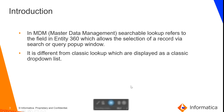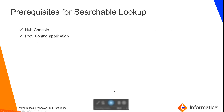Introduction. In MDM, a searchable lookup refers to a field in entity E360 which allows the selection of a record via a search or query pop-up window. It is different from a classic lookup, which is displayed as a classic drop-down list. The pre-requisite for searchable lookup involves the hub console and provisioning application.